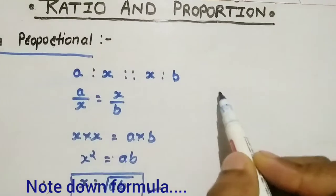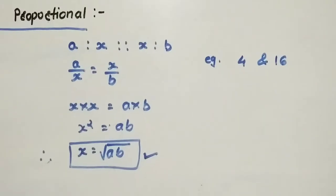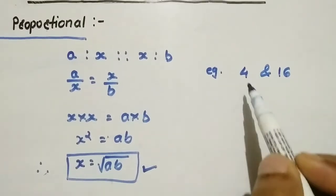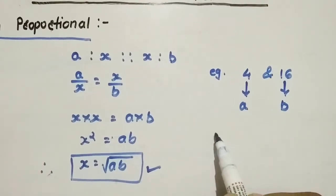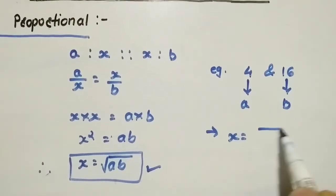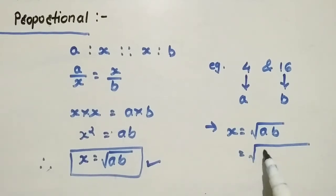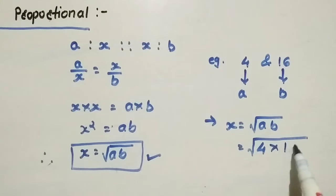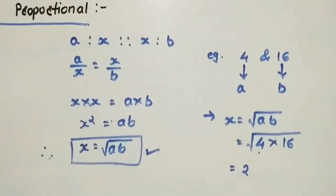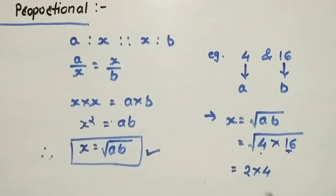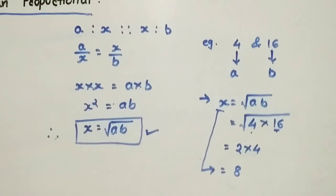For example, to find the mean proportional of 4 and 16: we consider 4 as the value of a and 16 as the value of b. We directly apply x equals square root of a times b, so x equals square root of 4 times 16. Now, 4 is 2 squared, and 16 is 4 squared, so 2 times 4 equals 8. Therefore, the mean proportional value is 8.